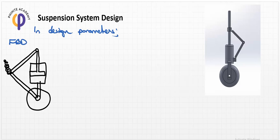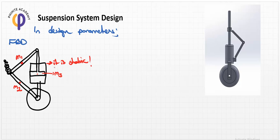We should assign all mass parameters: we have a rod with mass M1, mass M2, and this one is mass M3. The piston also has a mass, but it is a static value. Since its velocity is always zero, there are no dynamics, so we remove the piston mass. The mass parameter includes only moving parts: M1, M2, and M3.